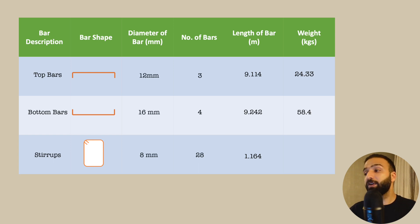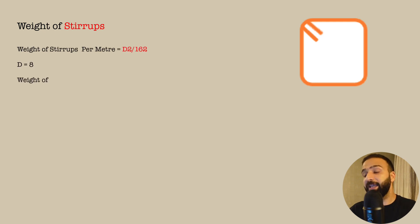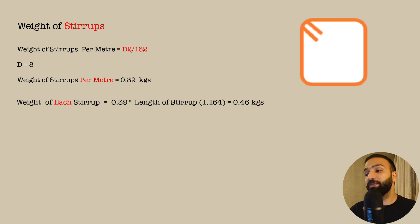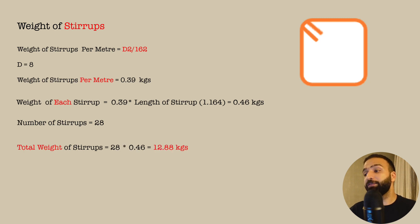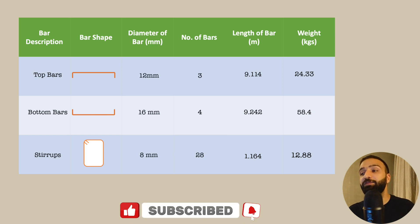For the stirrups, weight per meter is D² ÷ 162: 8² ÷ 162 = 0.39 kg/m. The weight of each stirrup is 0.39 × 1.164 = 0.46 kilograms. With 28 stirrups, the total weight is 28 × 0.46 = 12.88 kilograms. Filling this in the table completes our bar bending schedule for the beam.